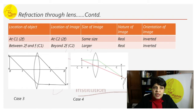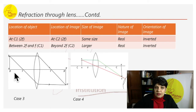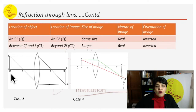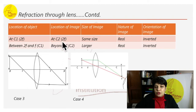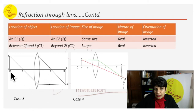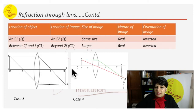Case 3: object is placed at C1 (which is 2f). The image is formed at C2 (also 2f on the other side). The image is the same size as the object (A'B' equals AB), it is real, and it is inverted.